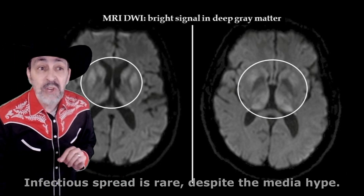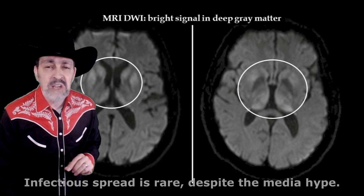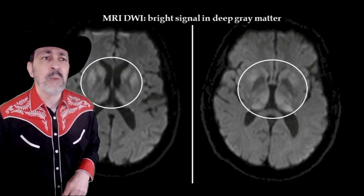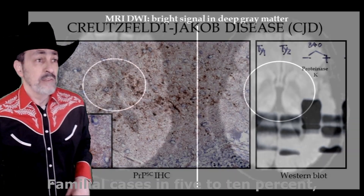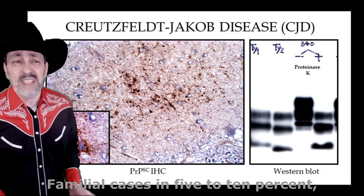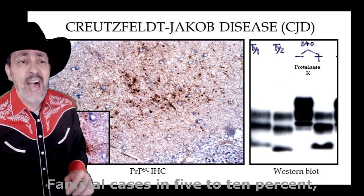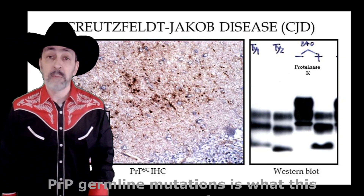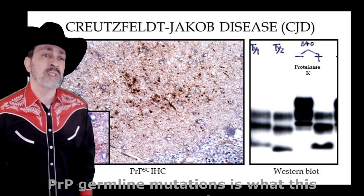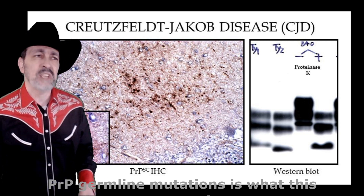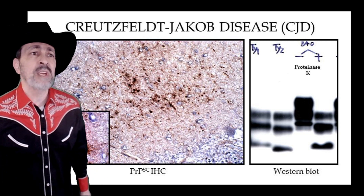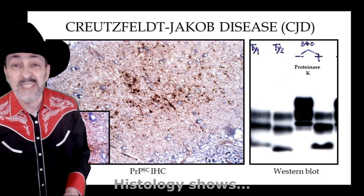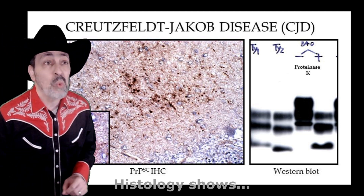Infectious spread is rare despite the media hype. Familial cases in five to ten percent — PrP germline mutations is what this represents. Histology shows...